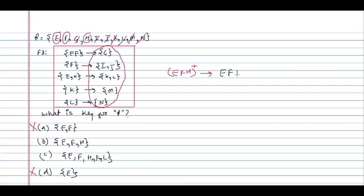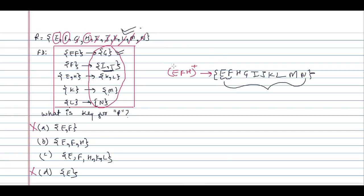With E, F, H themselves being trivial, we then apply the FDs: using EF we can determine G; using F we can determine I and J; using EH we can determine K and L; using K we can determine M; using L we can determine N. Therefore, taking the closure of EFH, we can determine all attributes in the relation — so EFH is a key.